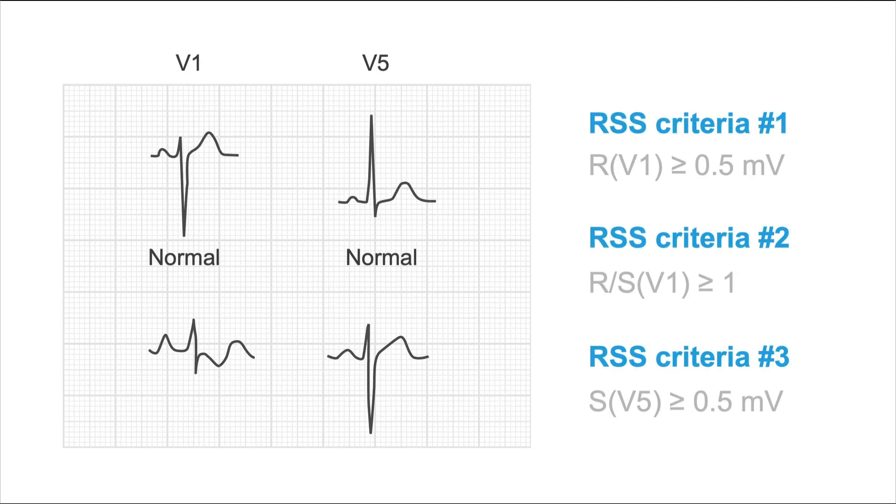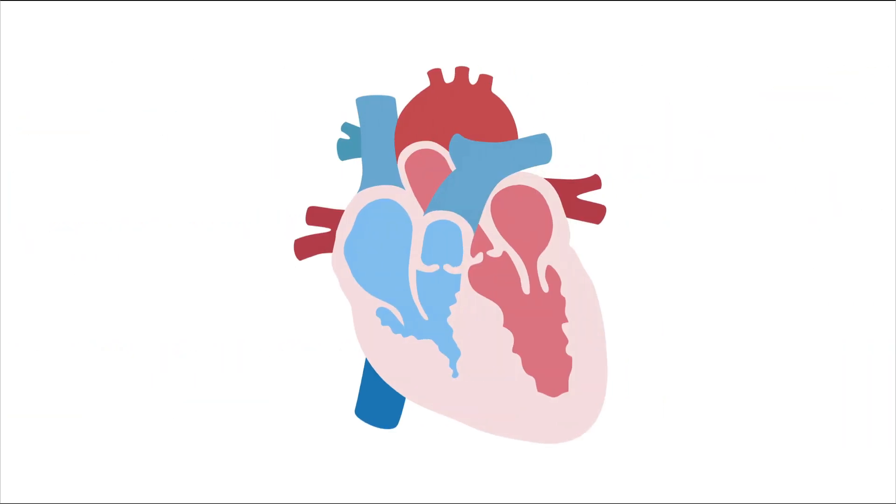All three RSS criteria are positive. The R in V1 is above 0.5 millivolts, so that's positive. The R to S ratio in V1 is above 1, so that's positive as well. The S in V5 is above 0.5 millivolts, so that is positive too. We have three positive RSS criteria, which makes the presence of right ventricular hypertrophy very likely.